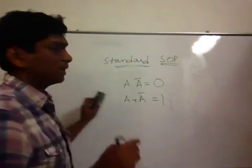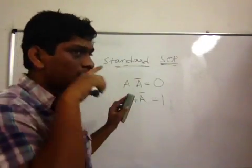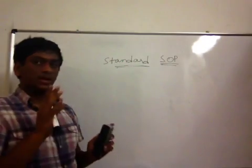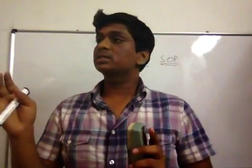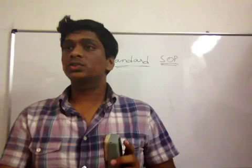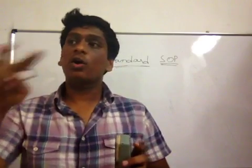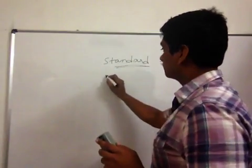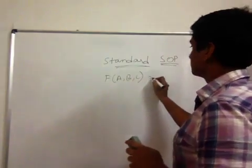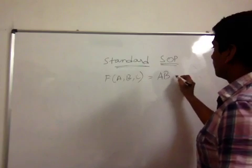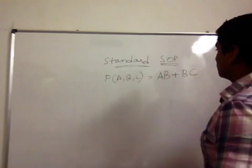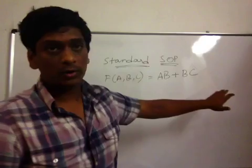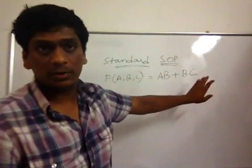So, for that, let me just show you a very small example. A standard SOP or POS form is that format in which every term has all the variables of the boolean expression. For example, you have this boolean expression F of A, B, C is equal to AB plus BC. Just look at this expression. It is a sum of products. AB is a product and BC is a product. So, this is an SOP.